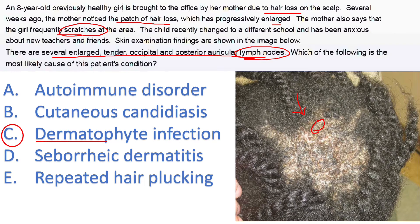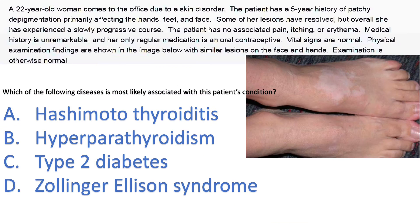Finally, repeated hair plucking refers to trichotillomania — a neurotic disorder where people keep pulling their hair. It shows just hair loss with no itching, no enlarged lymph nodes, and no scales. So the correct answer is C: dermatophyte infection.